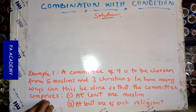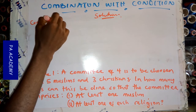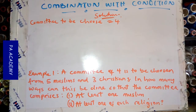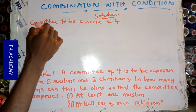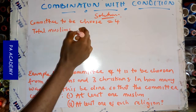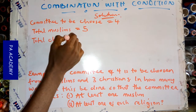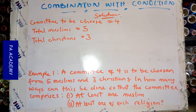The first thing we are going to do is bring out the important details from the question. Don't let the length of the question scare you — just extract the necessary information. The committee to be chosen is four. The total number of Muslims is five, and the total number of Christians is three.